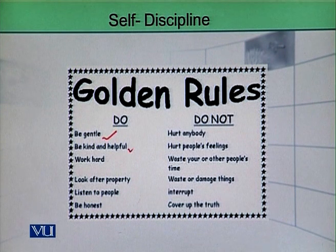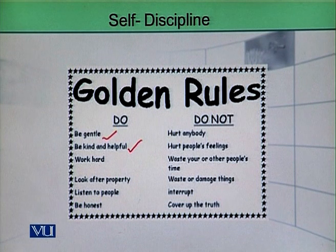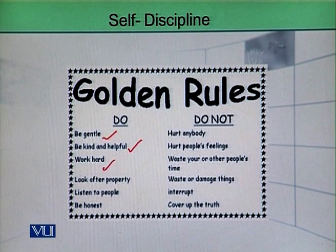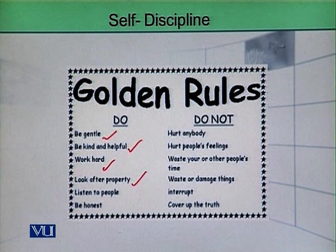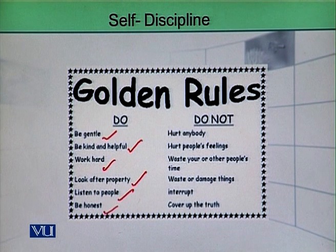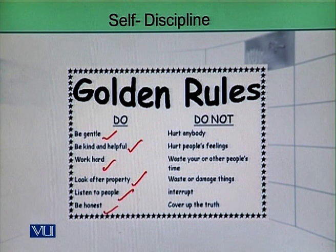The student should be kind and helpful towards others. Students should work hard — that should be part of self-discipline. They should look after their own property as well as the property of others. They should listen to people and they should be honest. These are some good rules as far as self-discipline is required.